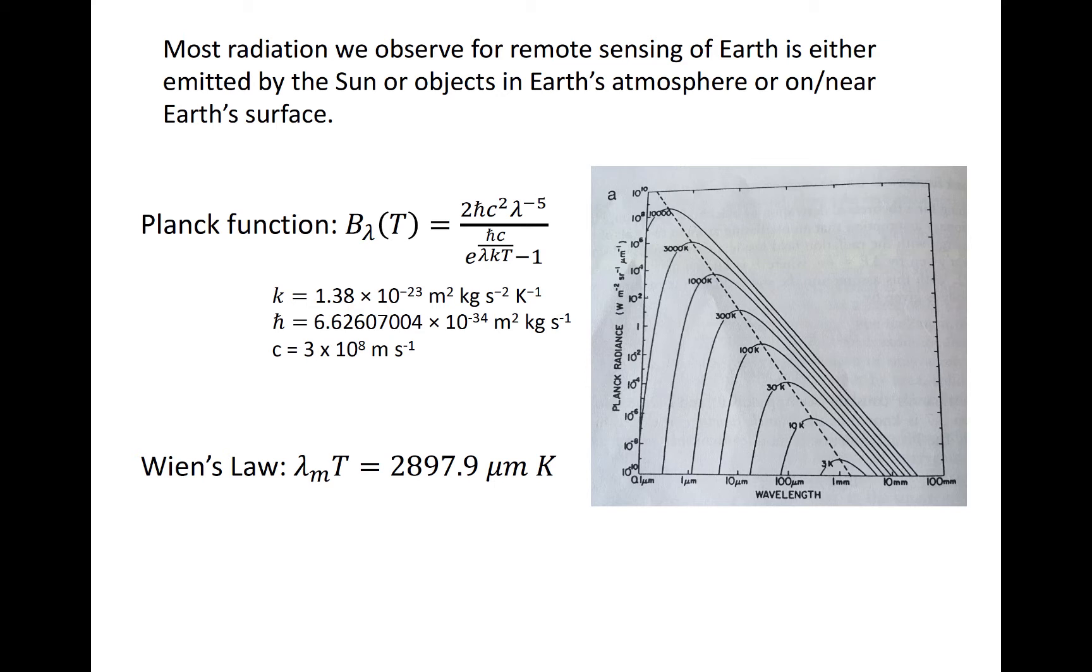Remember from your radiative transfer class that a black body is a perfect absorber and a perfect emitter. Therefore it obeys Kirchhoff's law, which states that emissivity of an object is exactly equal to its absorptivity, neither of which can exceed 1. We will approximate that many objects in the atmosphere are black bodies.